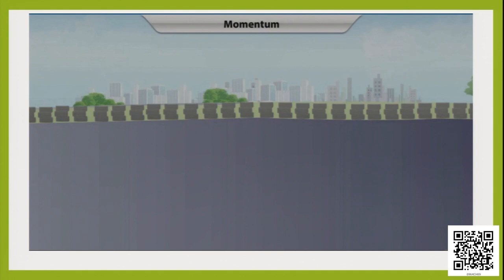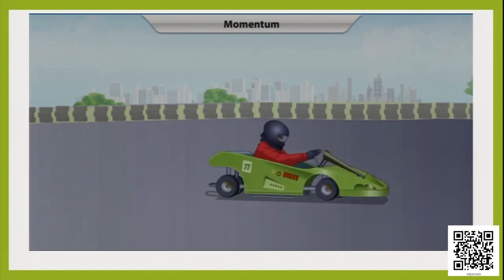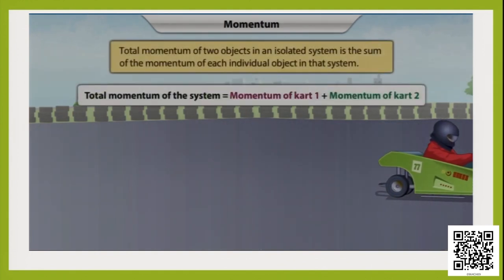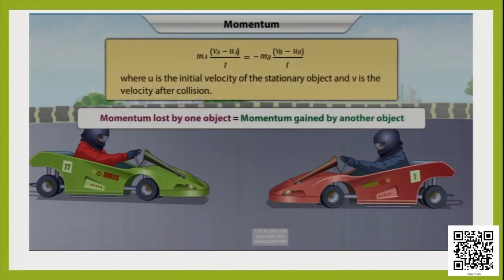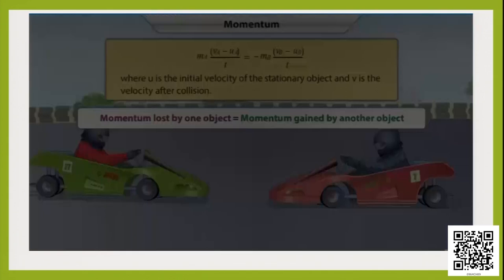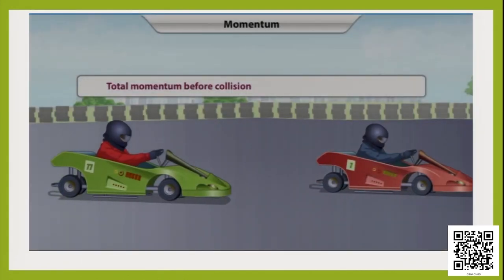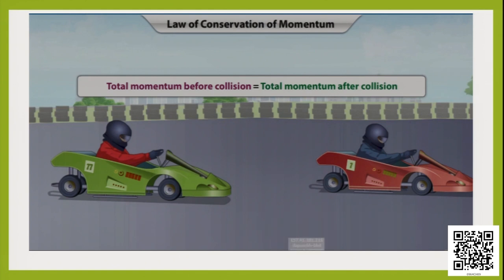When two moving objects collide, the total momentum in an isolated system is the sum of the individual momenta. In a collision, the momentum lost by one object equals the momentum gained by another — momentum is transferred from one object to another. The total momentum before collision equals the total momentum after collision. This is known as the law of conservation of momentum.